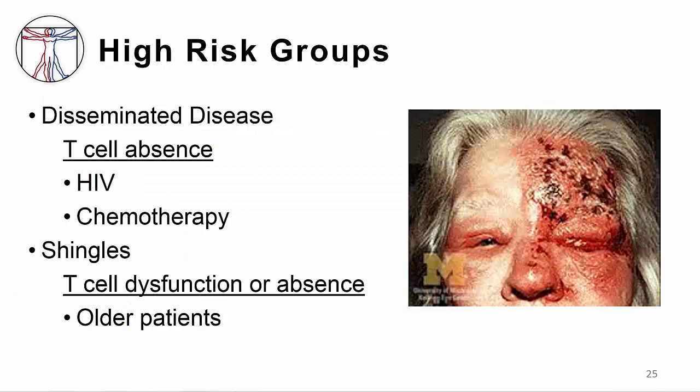Based on the immune response to VZV, high-risk groups are patients with T cell absence, who can develop disseminated disease even with reactivation of VZV. T cell dysfunction is also a risk factor for development of shingles, not only in older patients but in others with T cell dysfunction such as patients with rheumatoid arthritis.